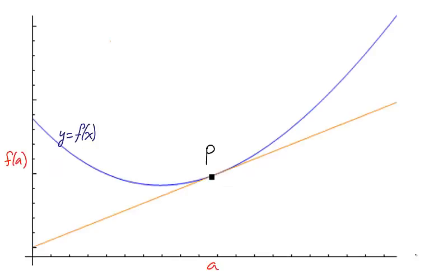In the first video of this section, we used linear approximations to estimate values. Given an x value a, the linearization of f at a is the line L_a. For values near a, say b, the actual value f(b) is approximated by the line L_a at b.